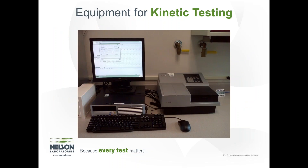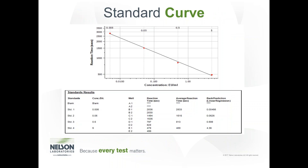Here is an image of some equipment used for endotoxin testing. This is what the standard curve would look like — you can see the reaction times of the different controls used, in this case from 5 EUs per ml down to 0.005 EUs per ml. This slide shows what a kinetic test would look like in real time. You can see in row E that the strongest control has started reacting, and we can actually notify customers before we get an actual result. Endotoxin testing is often quite time dependent.